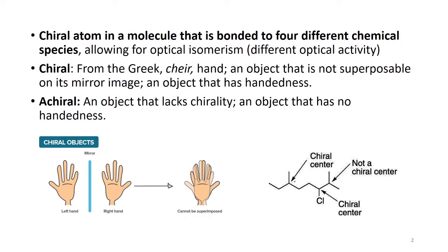If I look at this example, you could see that this is a carbon attached to hydrogen, to CH2CH2CHCl, to methyl, and to a cell group. This means this carbon is attached to four different groups surrounding it, and this is what will make it a chiral center.